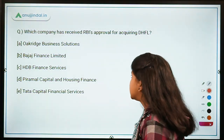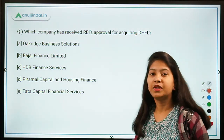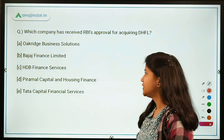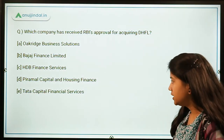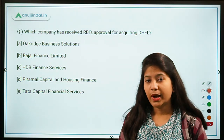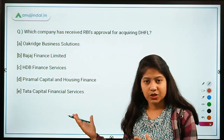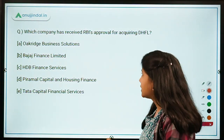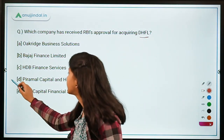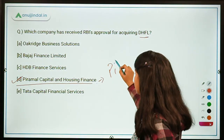The next question: which company has received RBI's approval for acquiring DHFL — Dewan Housing Finance Limited? The options are Oakridge Business Solutions, Bajaj Finance Limited, HDB Financial Services, Piramal Capital and Housing Finance, or Tata Capital Financial Services. The right answer is Piramal Capital and Housing Finance, which is part of the Piramal Group.